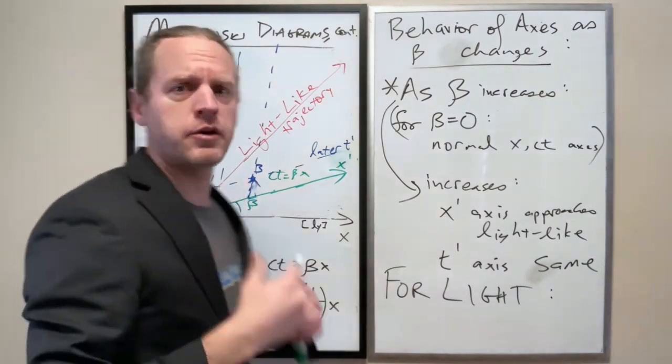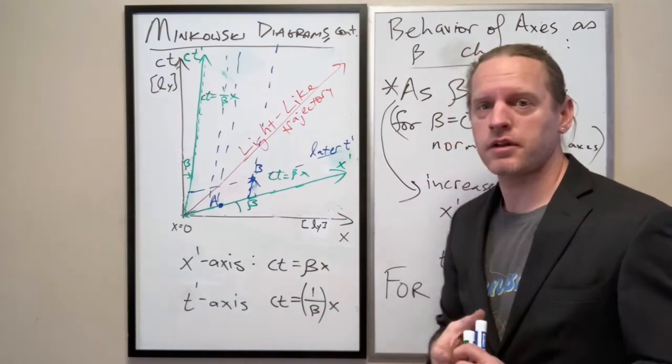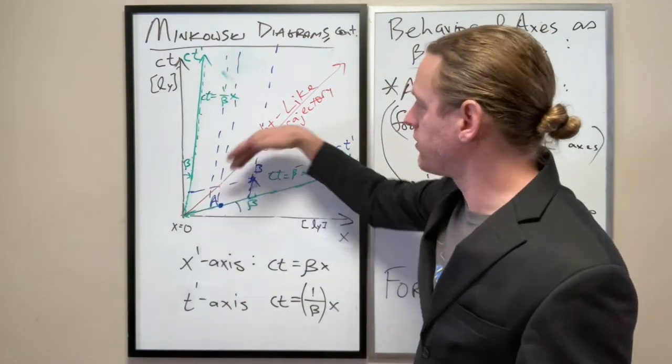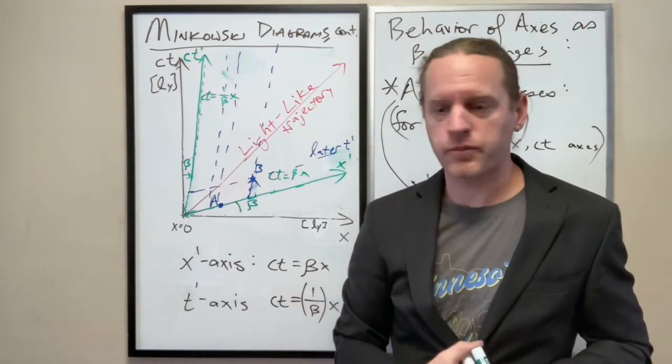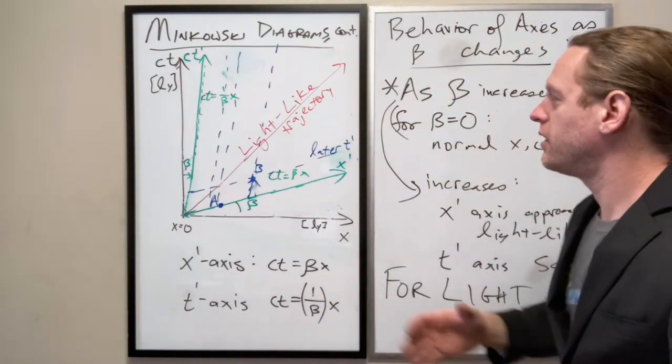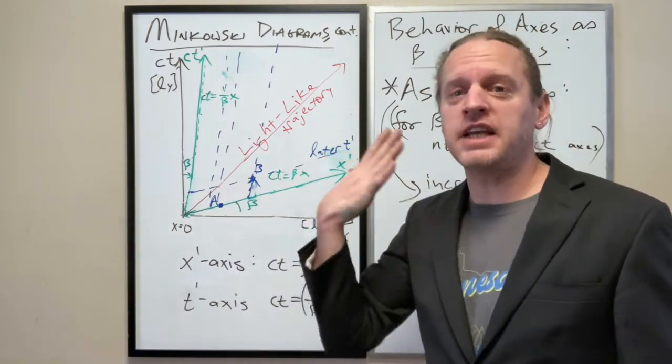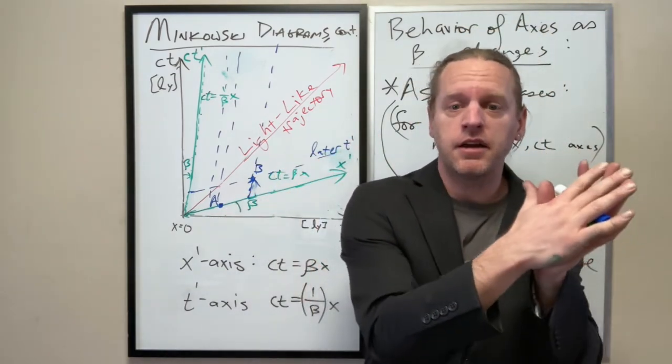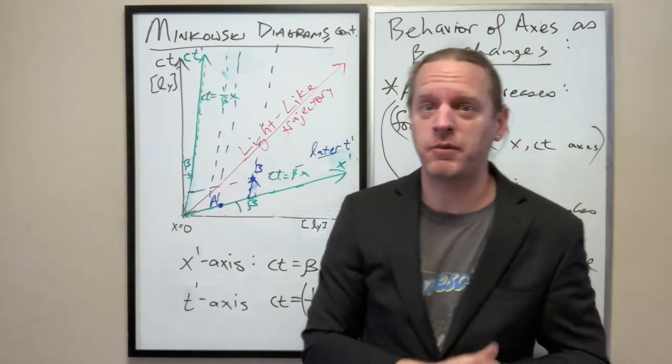But let's consider what happens for light. Light's entire world line here is along a path where x equals y. He doesn't see any, he or she doesn't see any sort of time delay between anything, because everything is simultaneous.